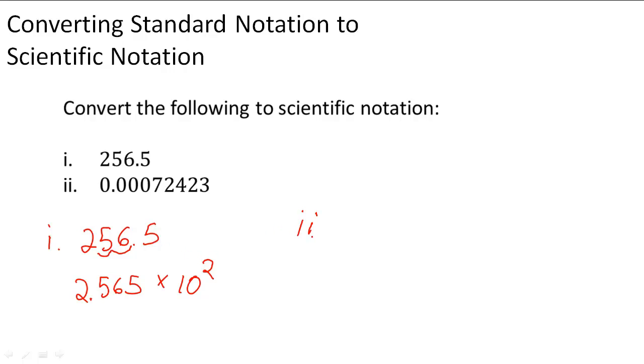For number two, we have 0.00072423. To get this, again we have to put in a number between one and ten. So it's going to be 7.24323.